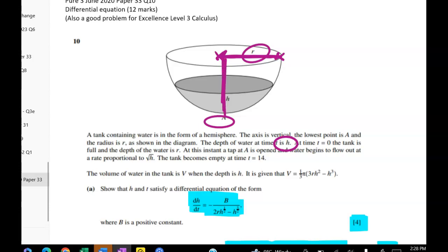And at this instant a tap A is opened and the water begins to flow out at a rate proportional to root H and after 14 seconds the tank becomes empty. And the volume of water in the tank is V when the depth is H and we're given this formula for the volume.